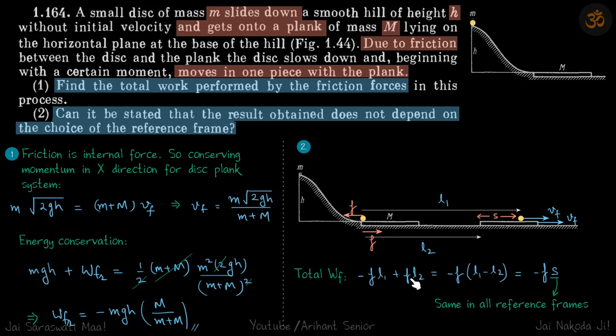So this we can write as minus F into (l1 - l2). And l1 minus l2 is the distance between the initial point of the plank and finally wherever the ball stopped. So that is s. So the work done by friction is minus F into s.